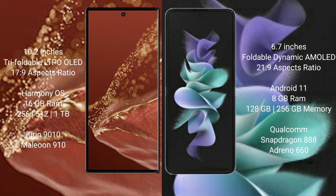The Wahabemate XT Ultimate runs on the Harmony operating system, while the Samsung Galaxy Z Flip 3 runs on Android 11. The Wahabemate XT Ultimate comes with 16GB RAM and 256GB, 512GB, or 1TB internal storage, with a Kirin 9010 processor and GPU 910. The Samsung Galaxy Z Flip 3 comes with 8GB RAM and 128GB or 256GB internal storage, with a Qualcomm Snapdragon 888 processor and Adreno 660 GPU.